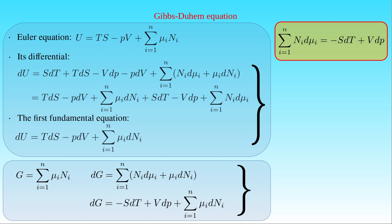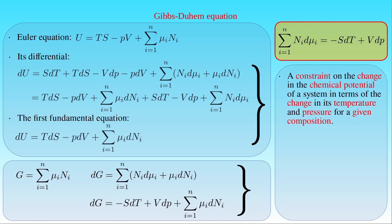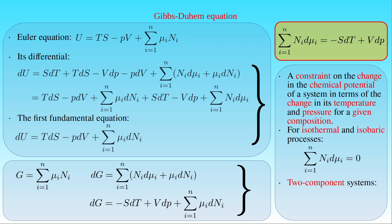Since the differentials of the chemical potential, the temperature, and the pressure appear in the Gibbs-Duhem equation, it represents a constraint on the change in chemical potential in terms of the change in temperature and pressure for a given composition. In the case of isothermal and isobaric processes, the right-hand side vanishes, and the sum of Nᵢ dμᵢ equals zero. For two-component systems, there are only two terms in the sum, and we can express the infinitesimal change in chemical potential μ₁ as minus the ratio N₁ over N₂ times the infinitesimal change in μ₂.